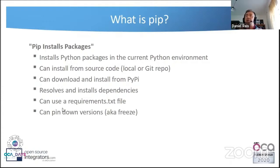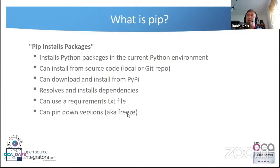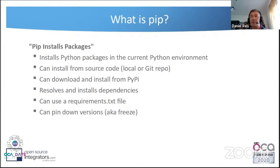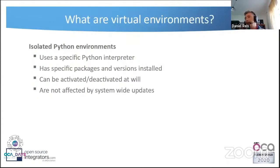Pip also supports a requirements.txt file, so you can conveniently store all your dependencies in a file. You run pip install -r requirements.txt and it installs everything. You can even pin down versions to freeze your current environment for reproducible deployments. This is very powerful and pip is truly the reference tool in the Python world.